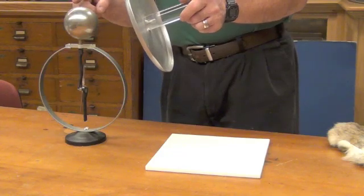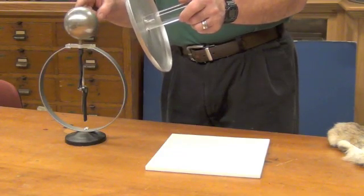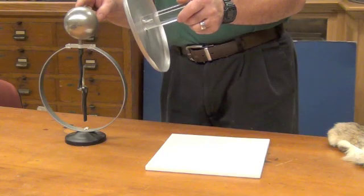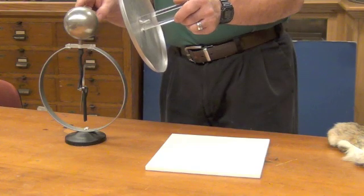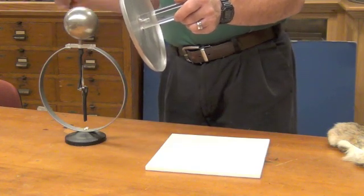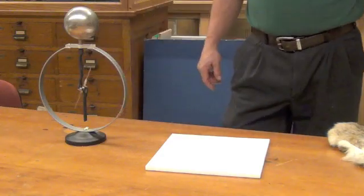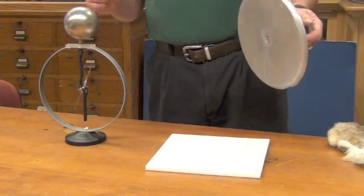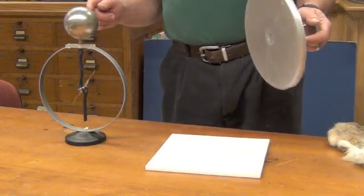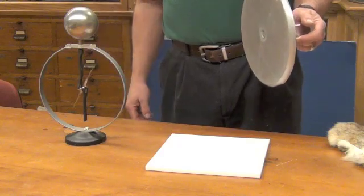Now if I touch the ball while the disc is still near the electroscope, I am depositing electrons onto the system, and if I break that and move that away, then I've charged this system by induction, and the net charge on there is now negative.